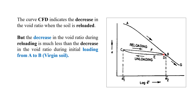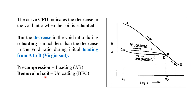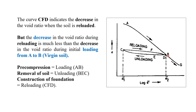The decrease in void ratio during reloading (CFD) is much less than the decrease during initial loading (AB), because the soil has already been consolidated. After pre-compression and removal of the fill, construction begins — that is reloading CFD. To conclude: pre-compression or pre-loading is indicated by AB (loading), removal of the fill by BEC (unloading), and construction of foundation by CFD (reloading).